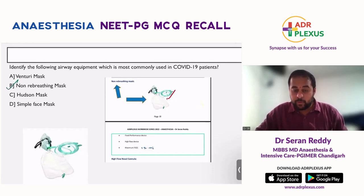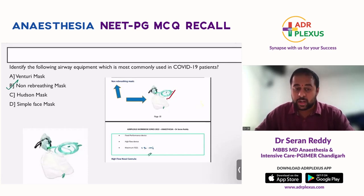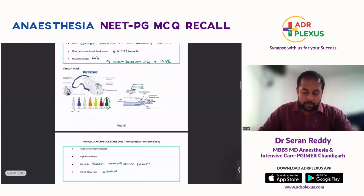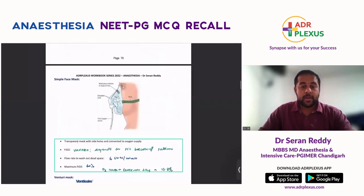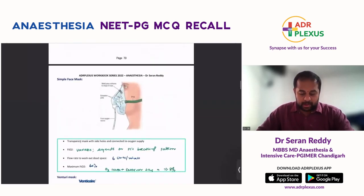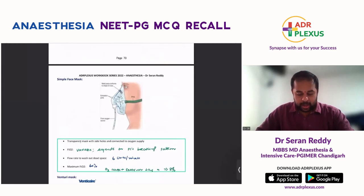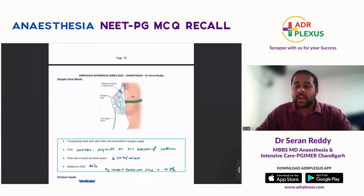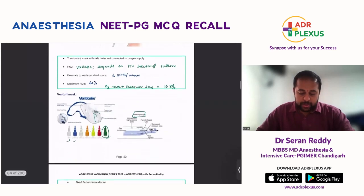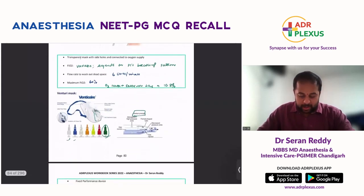The non-rebreathing mask is a fixed performance device and a high-flow device; the maximum FiO2 it can deliver is 90 to 100 percent. Regarding the simple face mask: it is a transparent mask that is connected to oxygen supply. FiO2 is variable and depends on the patient's breathing pattern and flow rate. A minimum of six liters per minute is needed to wash out dead space, and you can deliver up to 60 percent FiO2.